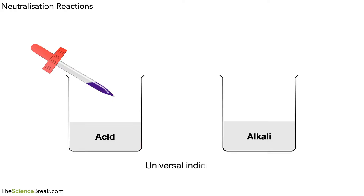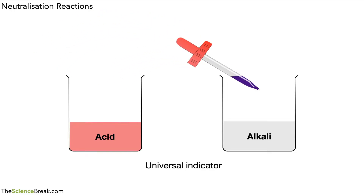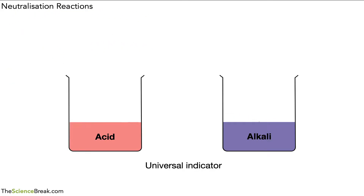Here's our universal indicator. We can add a drop or two into our solution — in this case it's acid — and we add the drop and we see a color change. We can also add a drop or two into our alkali and there's the color change for alkali. The acid is a kind of red color; the alkali is like a sort of purple color.